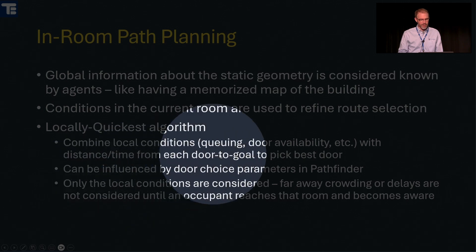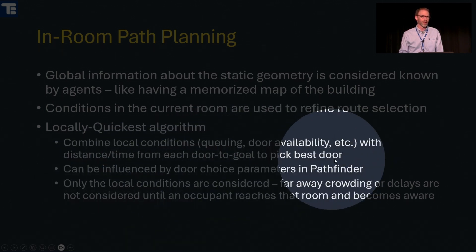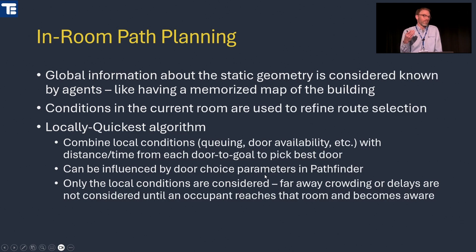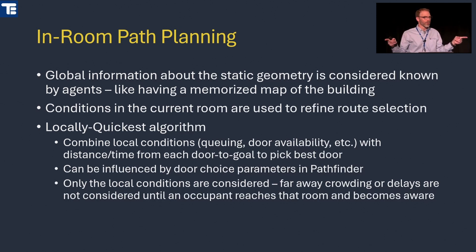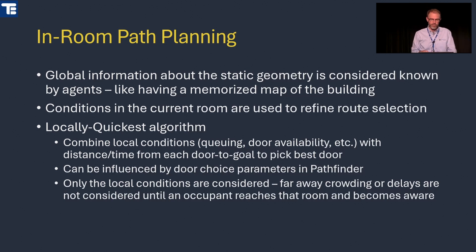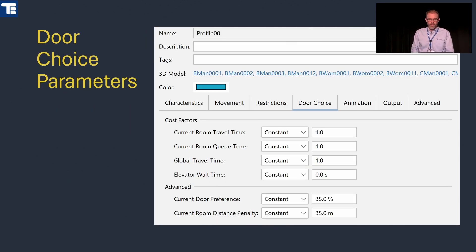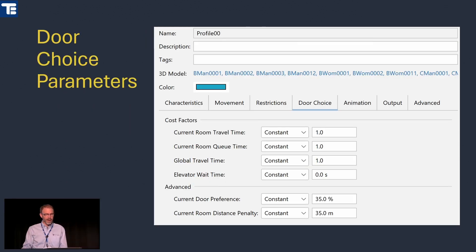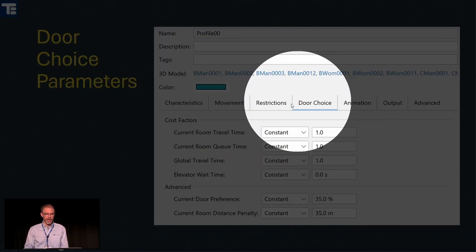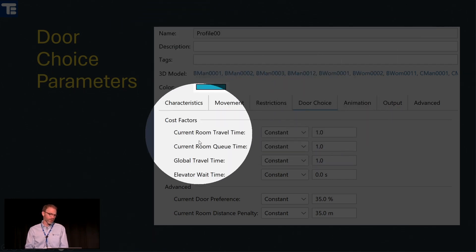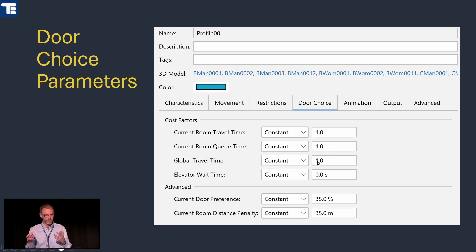These decisions can be influenced by door choice parameters — things like room distance penalty. You can model reduced global building knowledge by always preferring the closest exit in the current room. These parameters are actually in the occupant profile, so they can be changed per occupant type. This is where you find options like the door choice tab inside the profile settings.